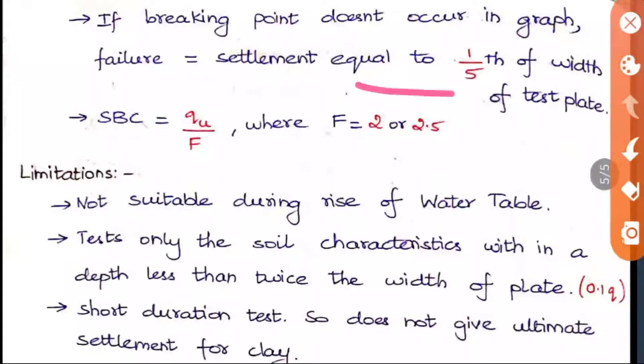SBC, we know already, it is QU by F, where F is generally 2 to 2.5. The limitations of this method is given. This method is not suitable for the soil when there is a rise of water table happening there. It tests only the soil characteristics within a depth less than twice the width of the plate. We have seen the significant depth, 0.1 cube, so that is also an important factor. It is a short duration test, so does not give ultimate settlement of the clay.